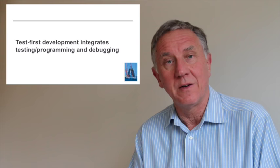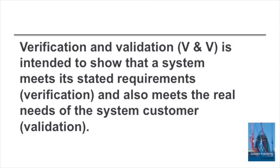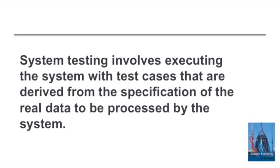Validation, or verification and validation as it's sometimes called, has two objectives. One is to show that the software meets its requirements. The other is to show that the software is actually useful to the user. And these are not necessarily the same thing, because the requirements may not properly capture what the user really needs. System testing is a process of executing the system using data that's derived from the specification — it's not real user data, it's data that is made up by the developers or the testing team, which seems to be consistent with the user specification.